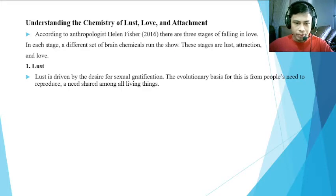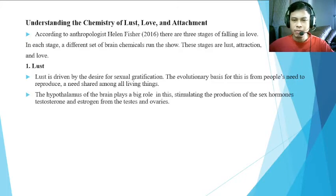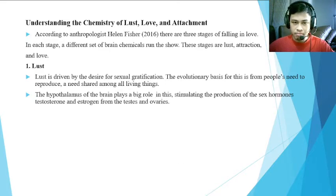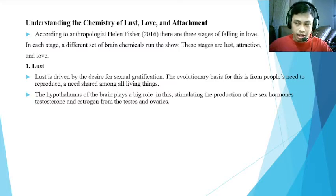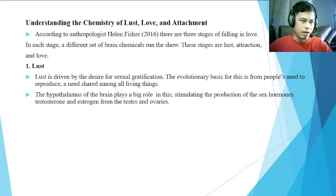The hypothalamus plays a big role in lust by stimulating the production of sex hormones — testosterone and estrogen — from the testes and ovaries. These are the brain chemicals produced during this stage. The hypothalamus is a small part of the brain located at its center — small but very important in its function.